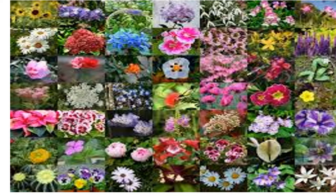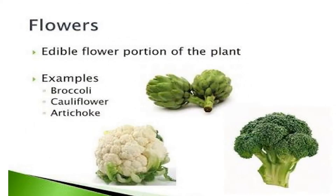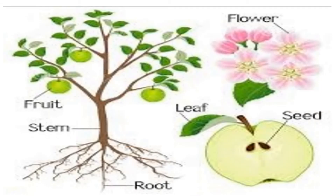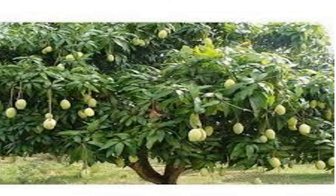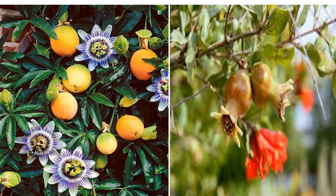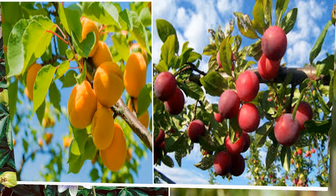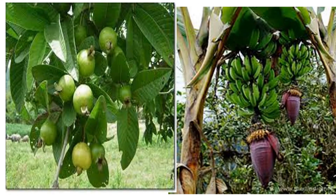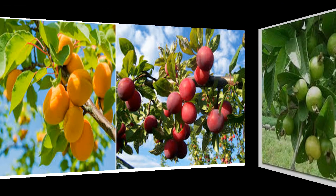So which leafy vegetable do you like? Students, do you know, after leaves, plants get flowers. Here are some examples of flowers that we eat — cauliflower, broccoli, and artichoke. And do you know what comes after flowers? After flowers, plants get fruits. Do you like to eat fruit? You should eat fruit because it is good for our health. Can you see these fruits on the trees? There are guava, banana, orange, and apple trees.